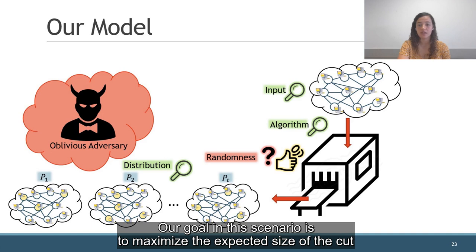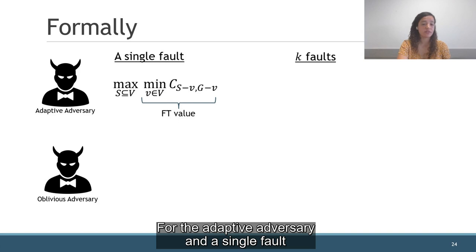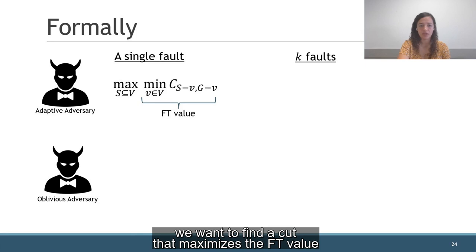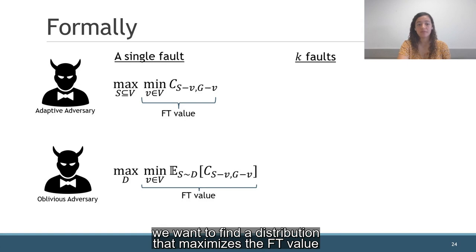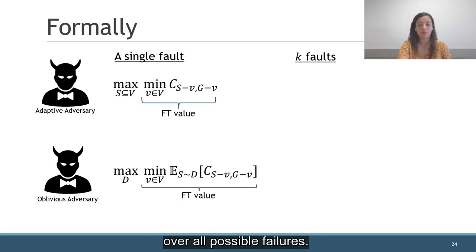And this is the formal definition. For the adaptive adversary and a single fault, we want to find the cut that maximizes the FT value, which is the minimal size of the cut over all possible failures. For the oblivious adversary and a single fault, we want to find the distribution that maximizes the FT value, which is the minimum expected size of the cut over all possible failures. For k-faults, we have similar definitions.